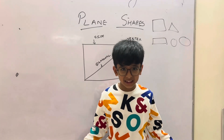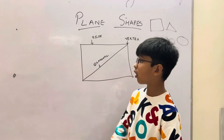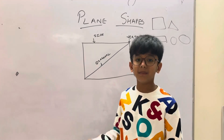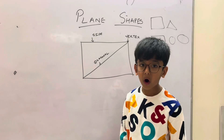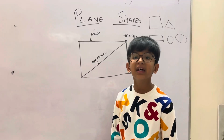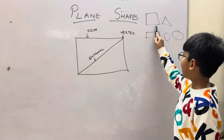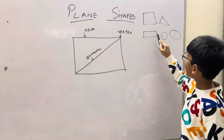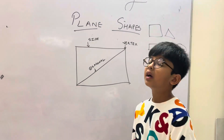A plane shape is a shape that can be drawn on a flat sheet of paper. Some examples of plane shapes are square, triangle, rectangle, circle, and oval.